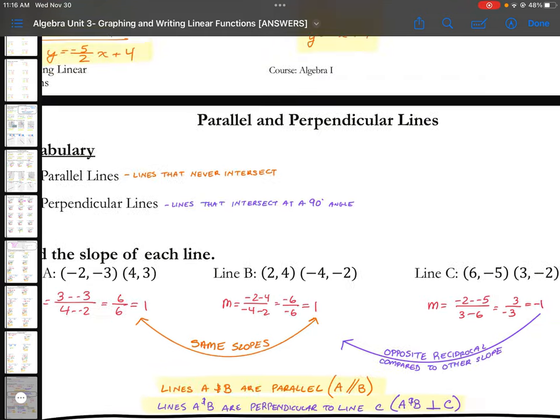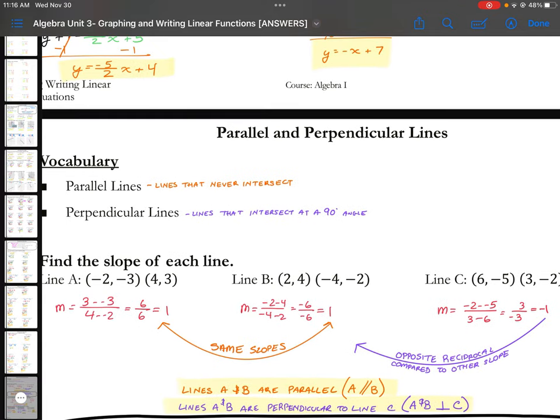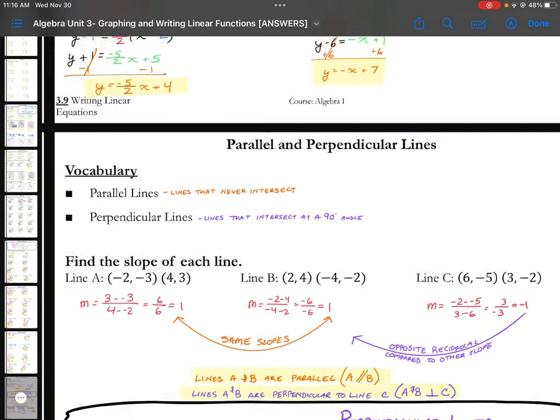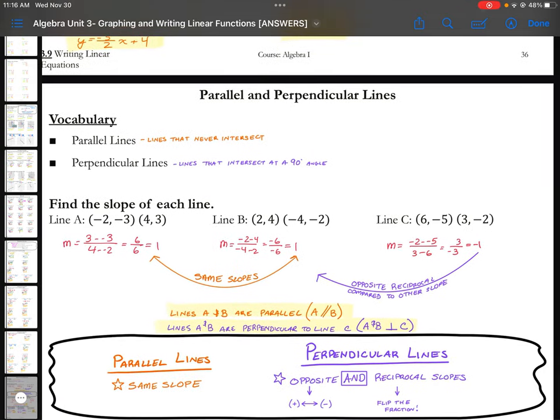And then once I give you the next set of definitions or the notes, you'll be able to see that lines A and B are perpendicular to line C. So perpendicular, the notation for it is kind of an upside down T.